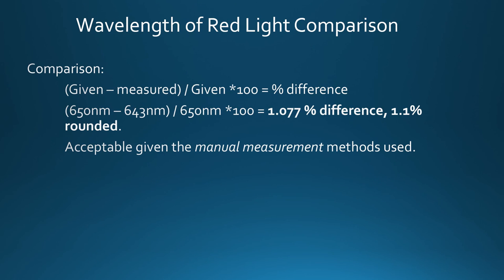This is going to show you how this method, although being sort of manual, is pretty good really. So the comparison is the given minus the measured divided by the given times 100 equals the percent difference.